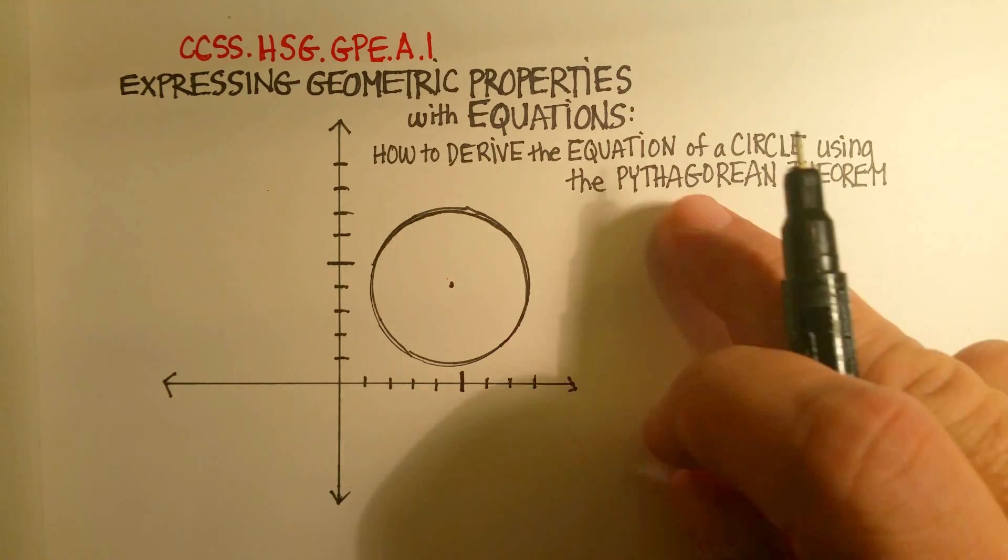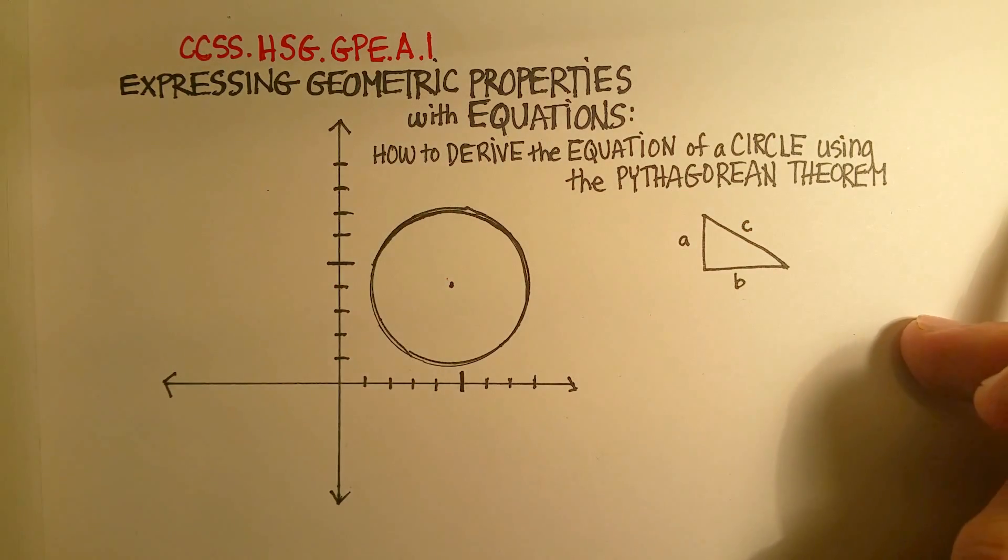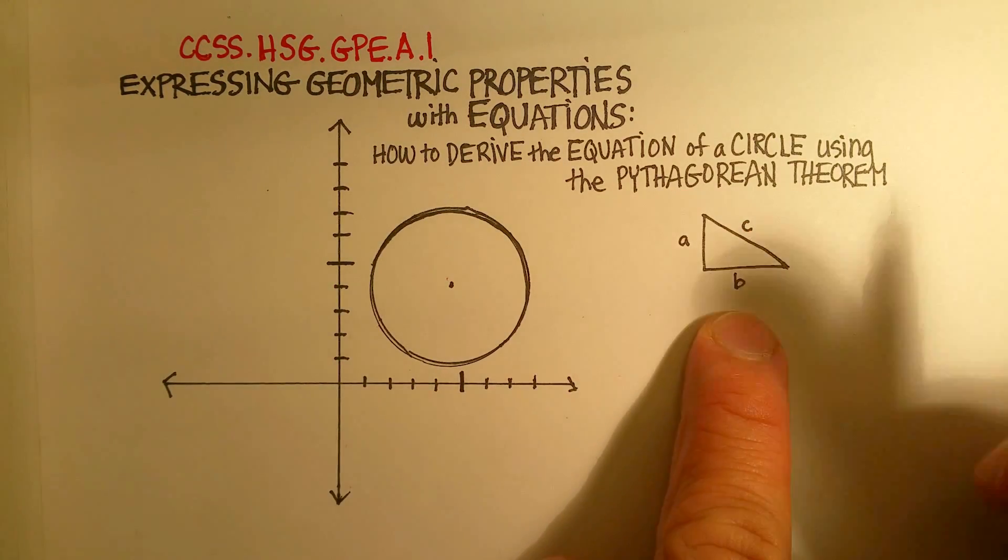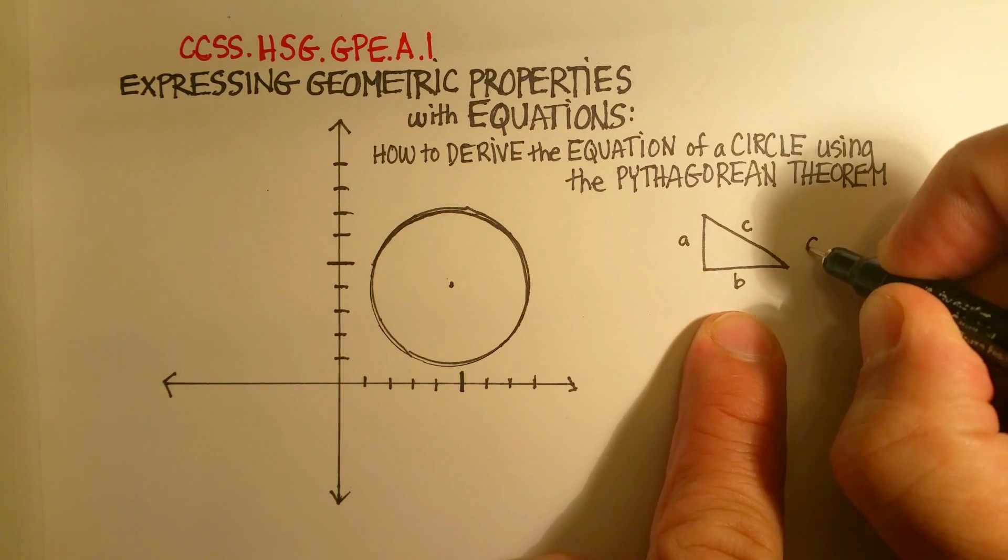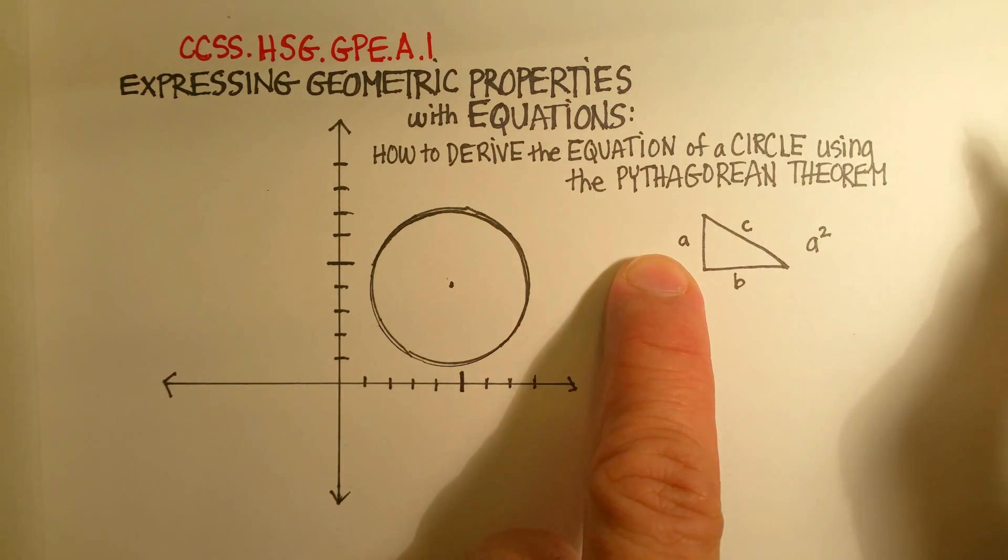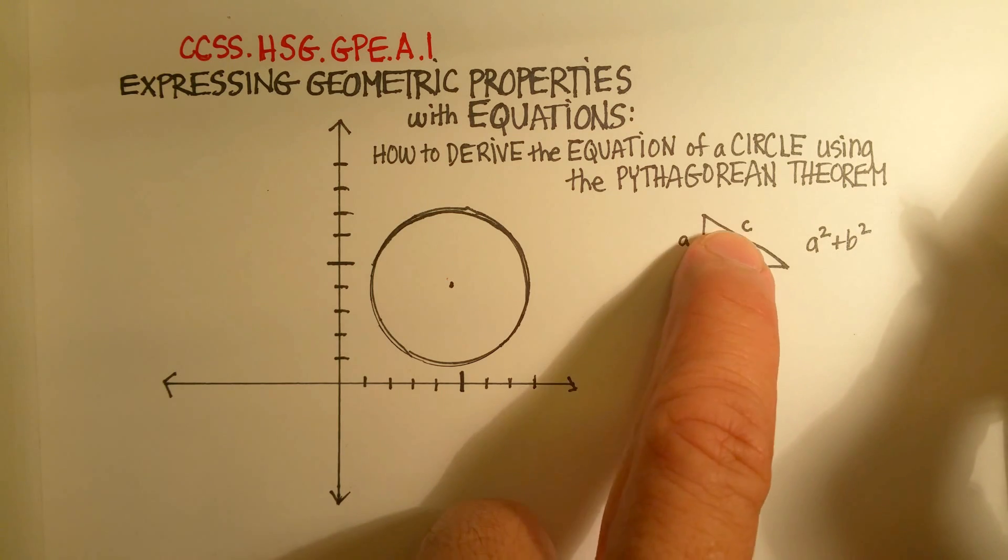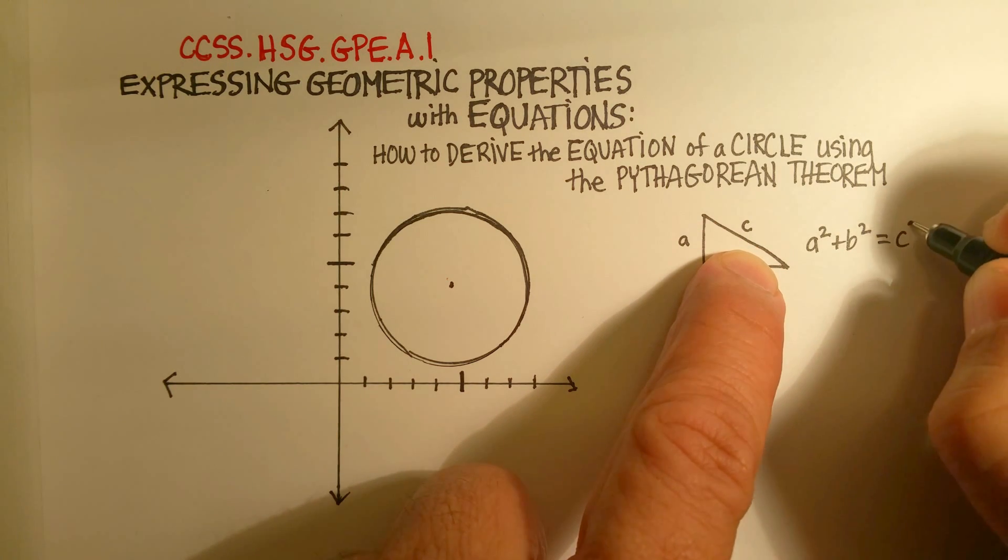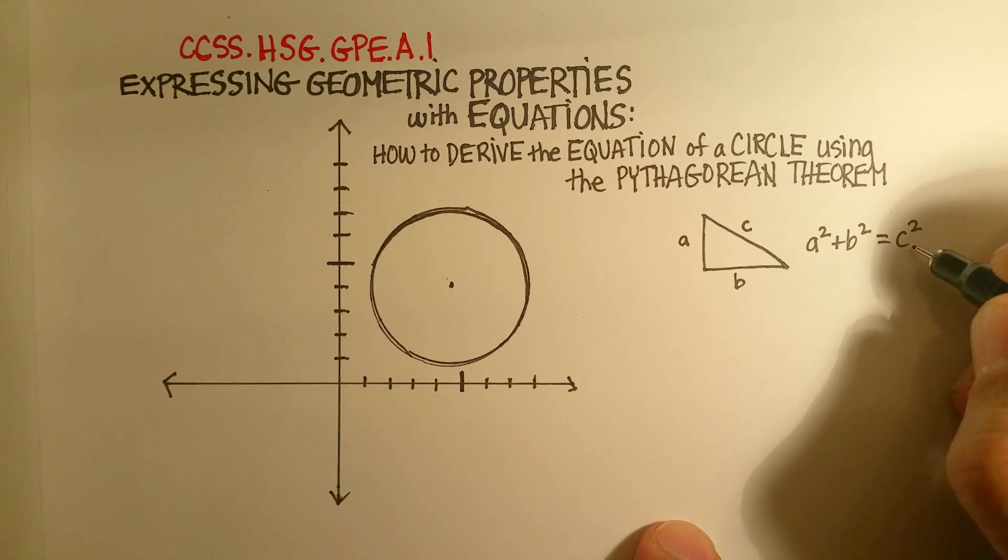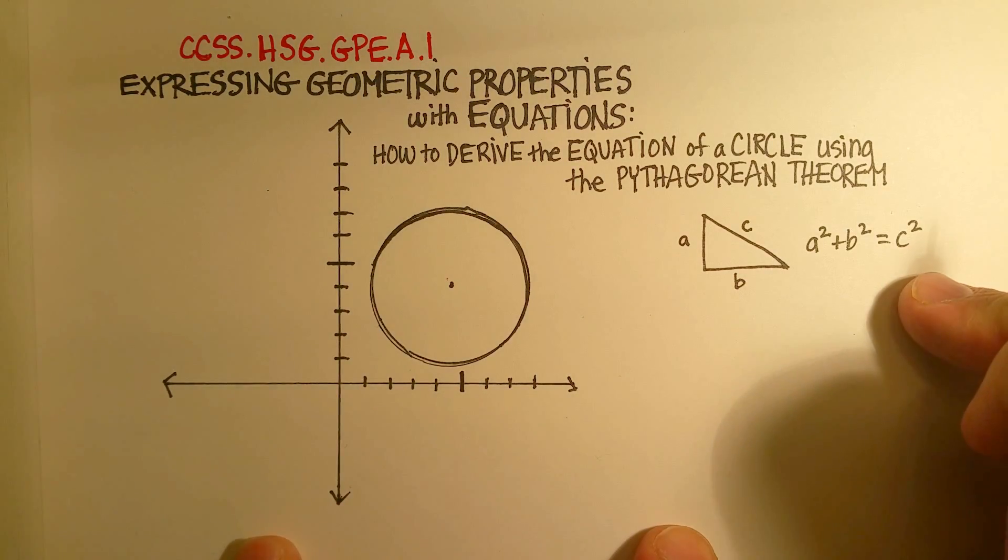The hypotenuse is normally known as c. So the Pythagorean Theorem says that a² + b² = c². And again, c is always the hypotenuse, just to make it easy for us.